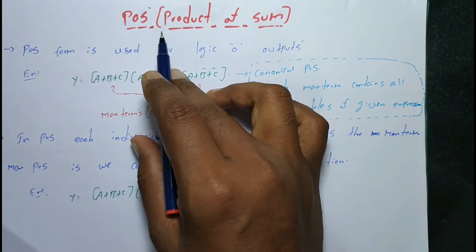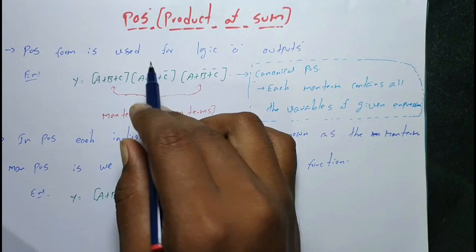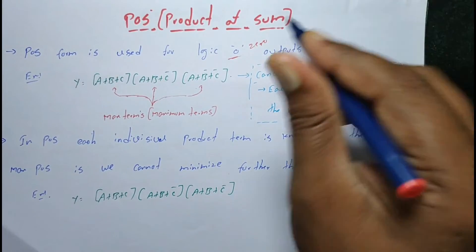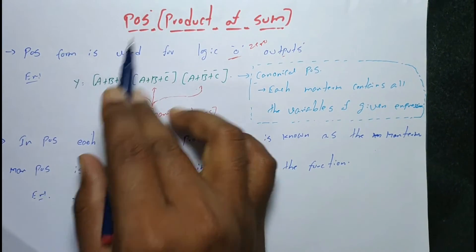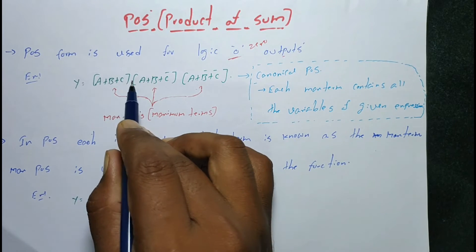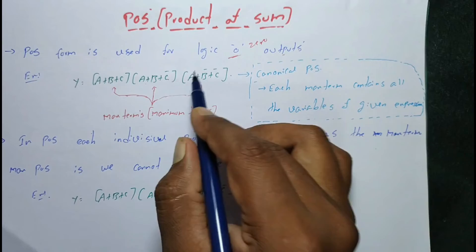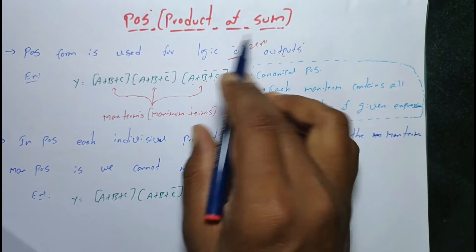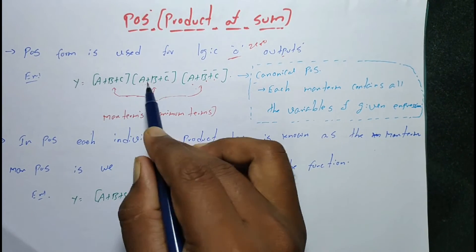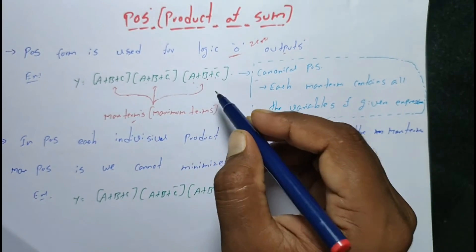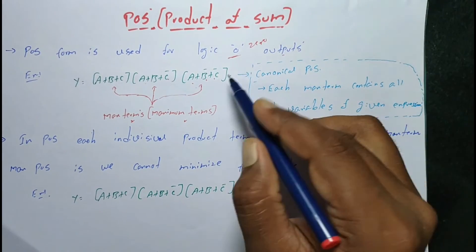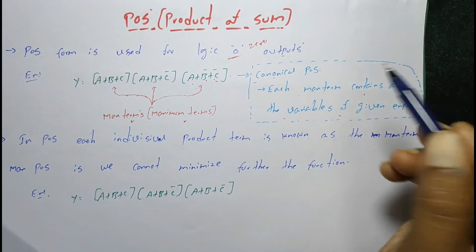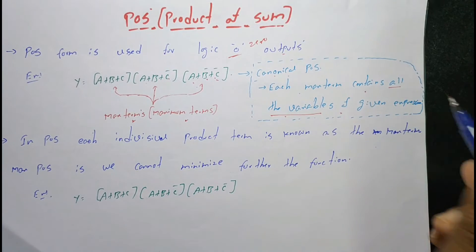Now, Product of Sum — POS. POS form is used for logic 0 operation. For example: (A + B + C)(A + B + C̄)(A + B̄ + C̄). This is the canonical POS form. In POS form, the terms are called max terms or maximum terms. Each max term contains all the variables of the given expression.